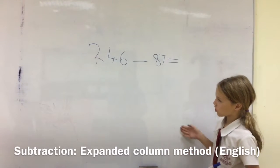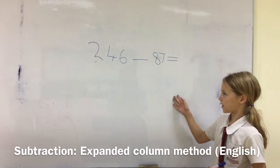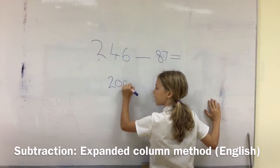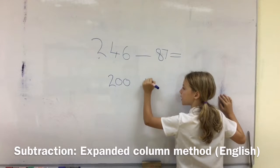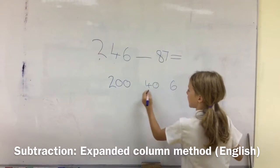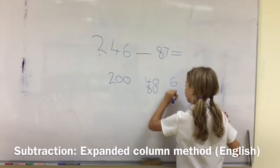First, we're going to partition 246. So, 200 is here, 40 is here, 6 is here, and then 80 and 7.